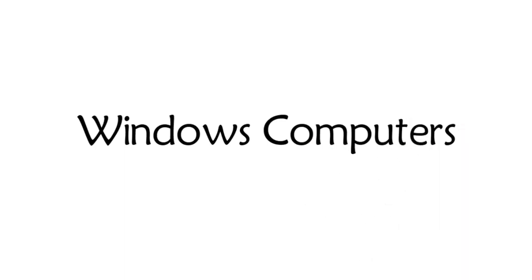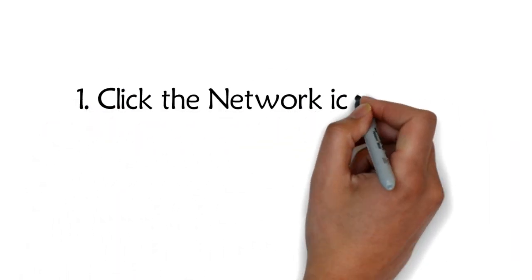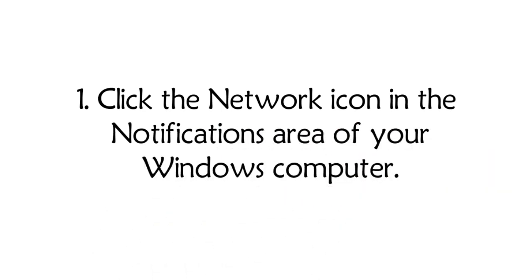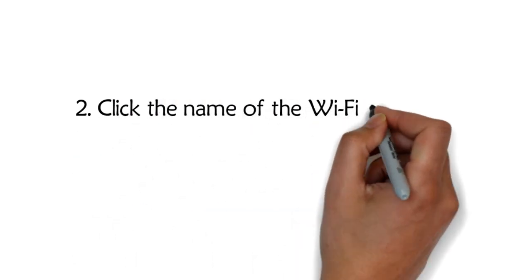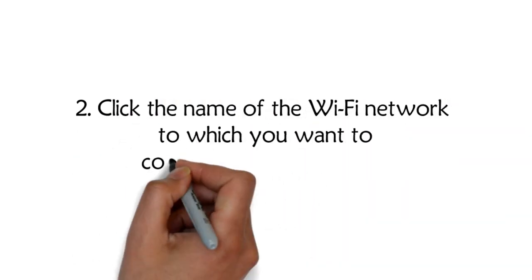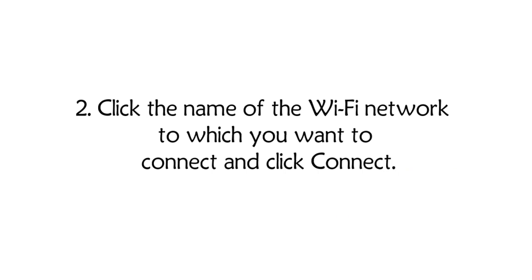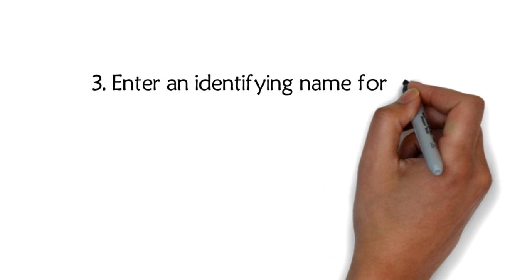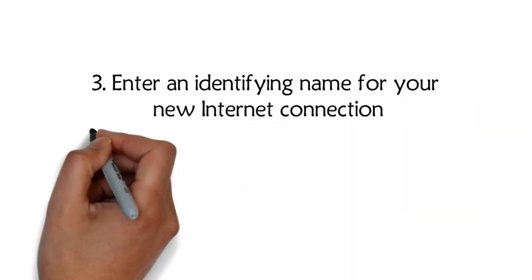Windows computers: 1. Click the network icon in the notifications area of your Windows computer. 2. Click the name of the Wi-Fi network to which you want to connect and click connect. 3. Enter an identifying name for your new internet connection in the provided field.